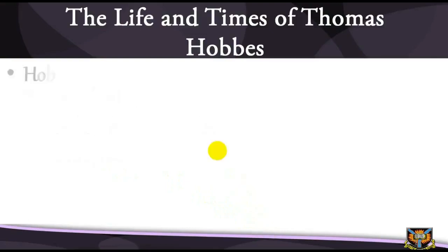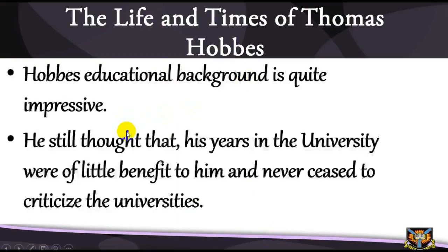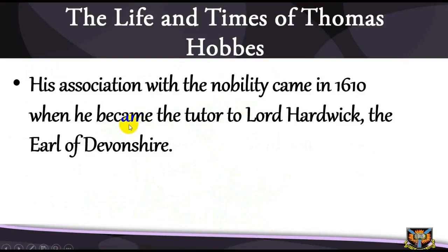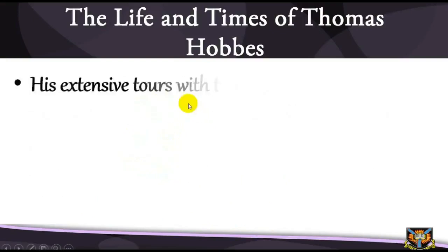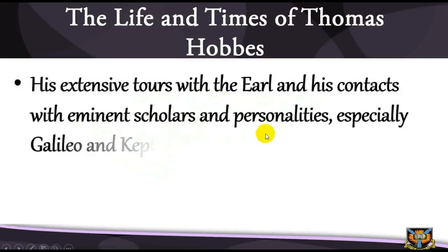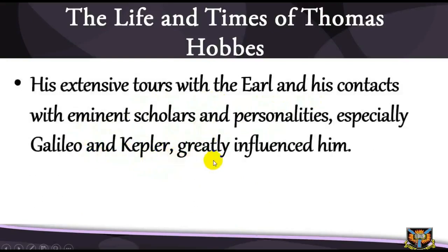Hobbes's educational background is quite impressive. Born the son of an uneducated and ill-tempered vicar, he was able, through the help of an uncle, to acquire a good knowledge of the classics — to the extent of translating the works of European authors into Latin at the early age of 14 — and to enter Oxford at 15, where he read logic and the philosophy of Aristotle. Ironically, Hobbes felt his years at university were of little benefit to him and never ceased to criticize the universities. His association with nobility came in 1610, when he became the tutor to Lord Hardwick, the Earl of Devonshire. His extensive tours with the Earl and his contacts with eminent scholars, especially Galileo and Kepler, greatly influenced him.